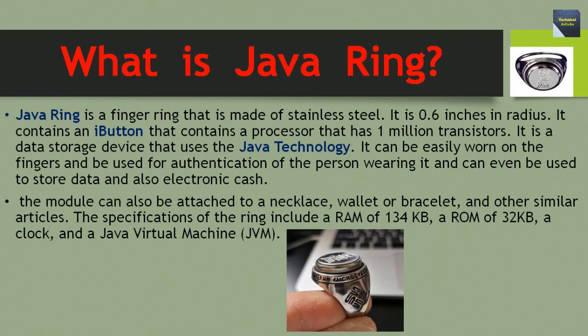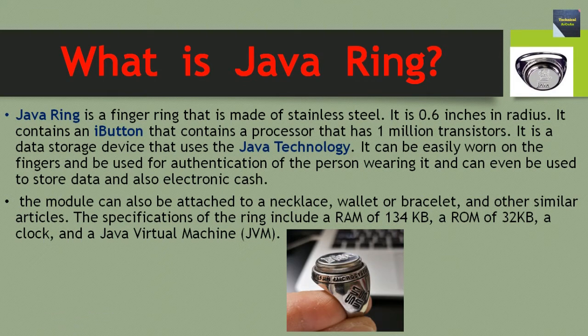Java Ring is a finger ring that is made of stainless steel. It is 0.6 inches in radius. It contains an iButton that contains a processor that has 1 million transistors. It is a data storage device that uses Java technology. It can be easily worn on the fingers and used for authentication of the person wearing it, and can even be used to store data and also electronic cash. The module can also be attached to a necklace, wallet, or bracelet and other similar articles.